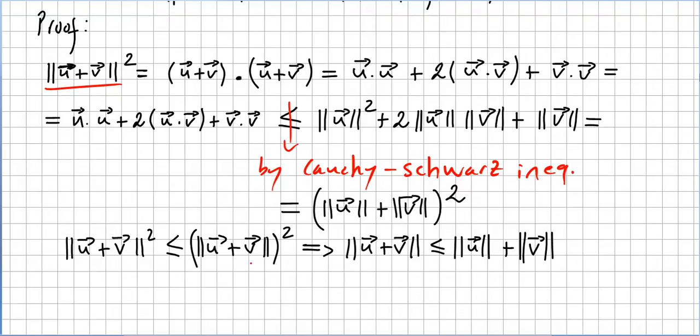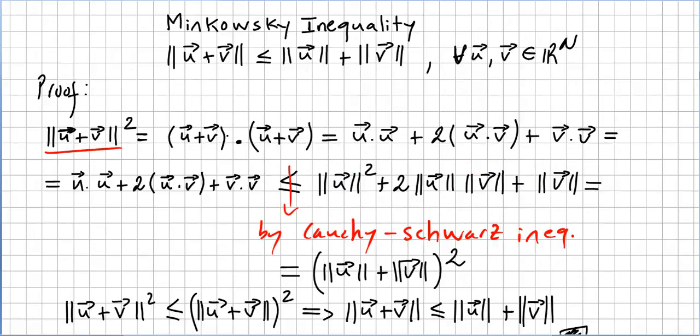and we get ||u+v|| ≤ ||u|| + ||v||. And this concludes the proof. This is the so-called Minkowski inequality.